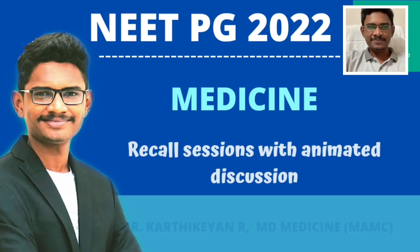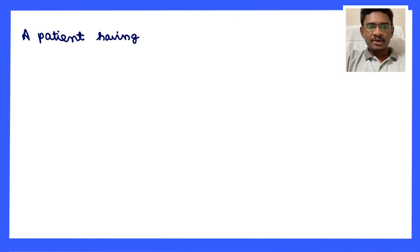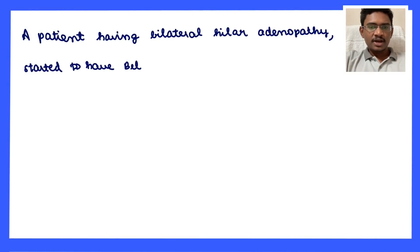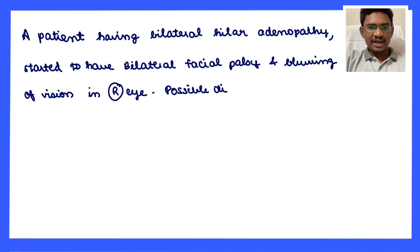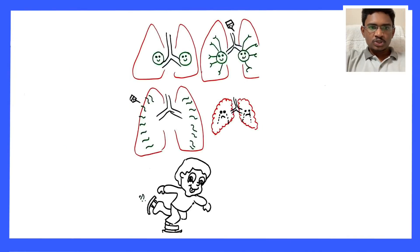Hello friends, welcome back to the channel. Today we will be having a short recall session on medicine questions asked in NEET. First is a patient having bilateral hilar lymphadenopathy with bilateral facial palsy who developed blurring of vision in the right eye. The possible diagnosis options were tuberculosis and sarcoidosis — the answer is sarcoidosis.